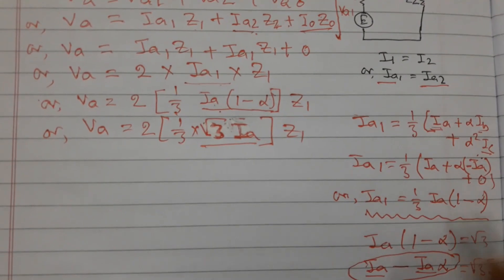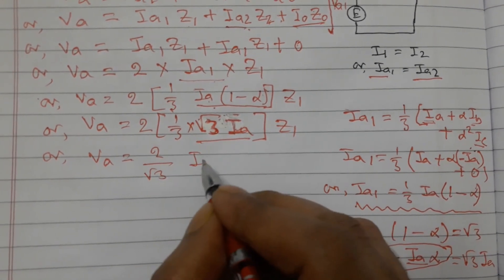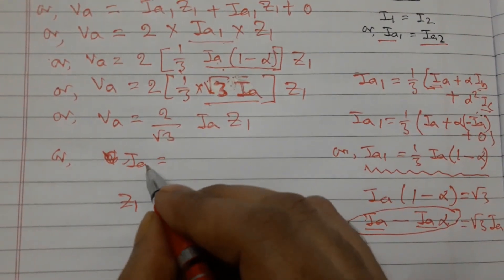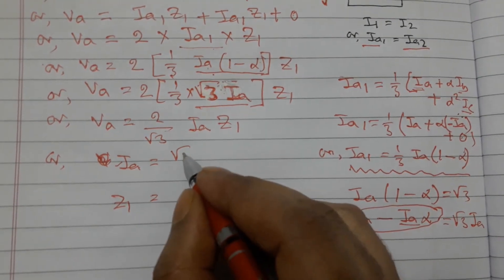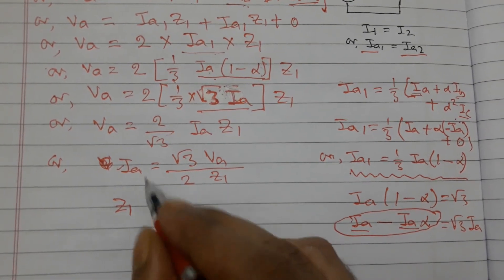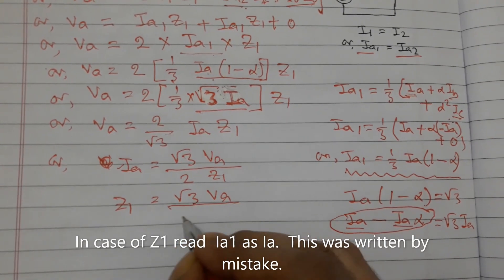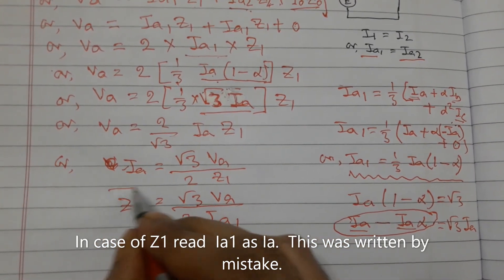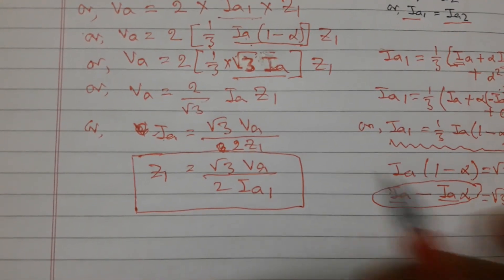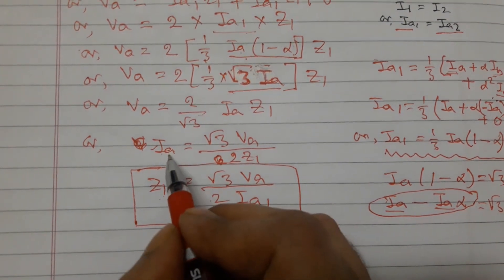Now we can write Va equals (2/root 3)·Ia·Z1. Rearranging, we get Ia equals root 3·Va divided by 2·Z1, and Z1 equals root 3·Va divided by 2·Ia. This is the impedance measured by the relay — the value of Z1 that the distance protection relay sees — and Ia is the fault current flowing through the fault loop.